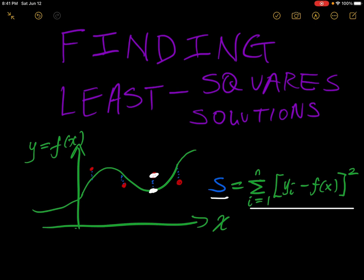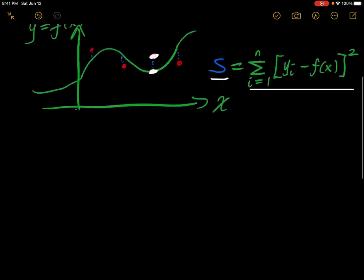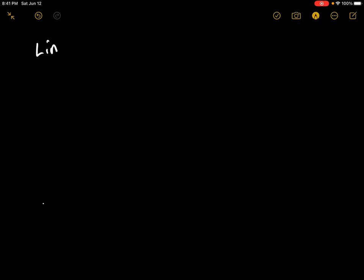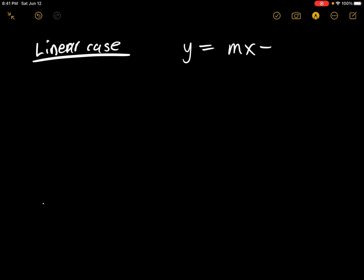Let's see how this works in a very simple example and consider a linear case — a straight line where y is equal to mx plus b.